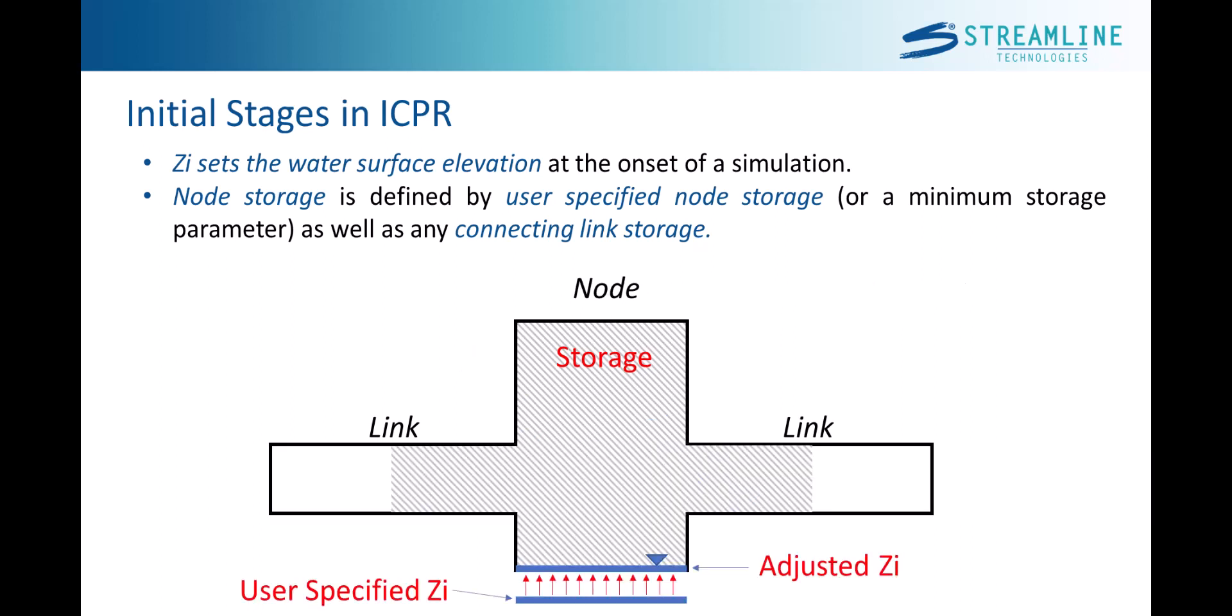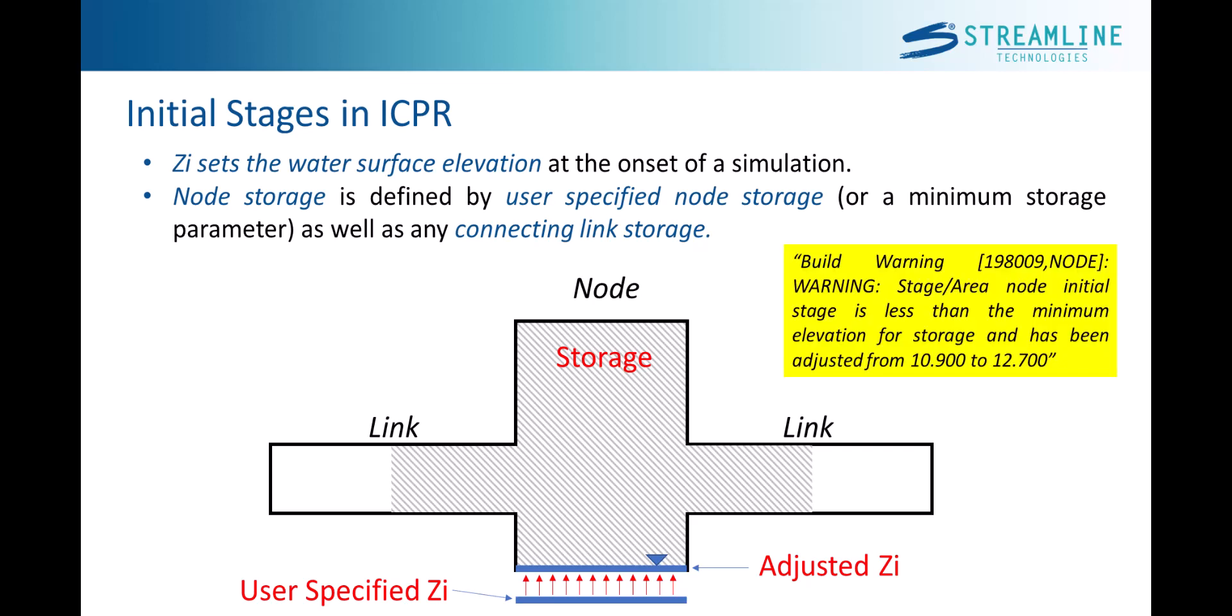If you happen to set the initial stage below the defined storage, ICPR will simply adjust the starting elevation at runtime and issue a warning message. If no storage is defined in the node dataform, the program uses the lowest connecting link invert as the initial stage.